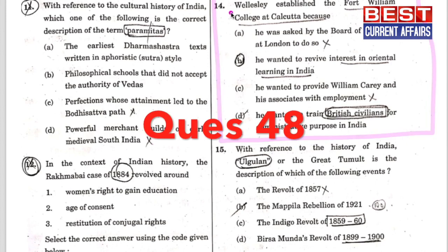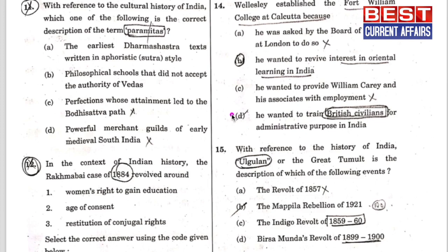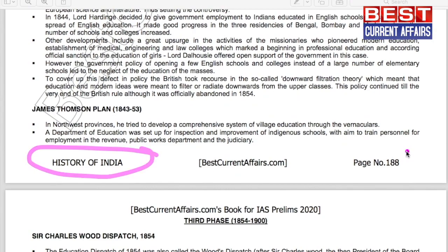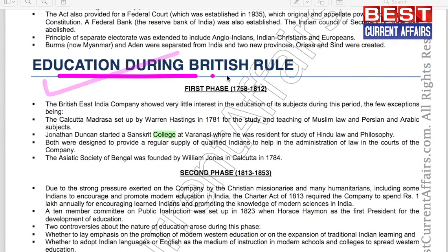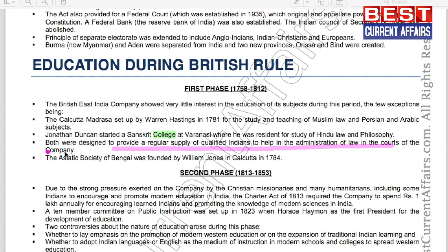Wellesley established the Fort William College at Calcutta because he wanted to train British civilians for administrative purposes in India. From our history book, page 188, on education during British rule: colleges were opened to provide a regular supply of qualified persons to help in the administration of law in the courts of the company. D is the answer.